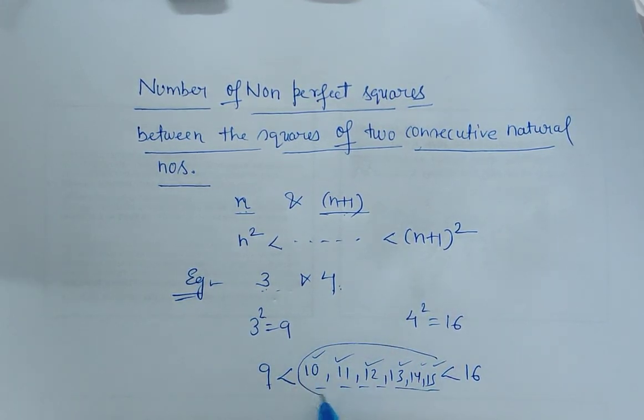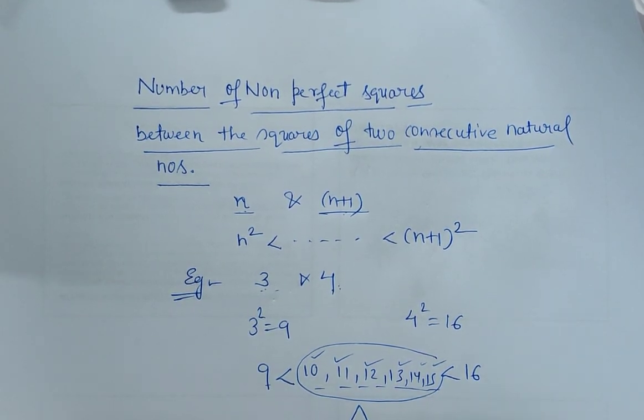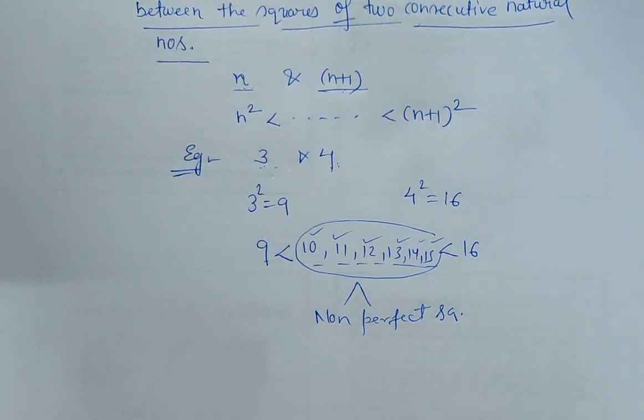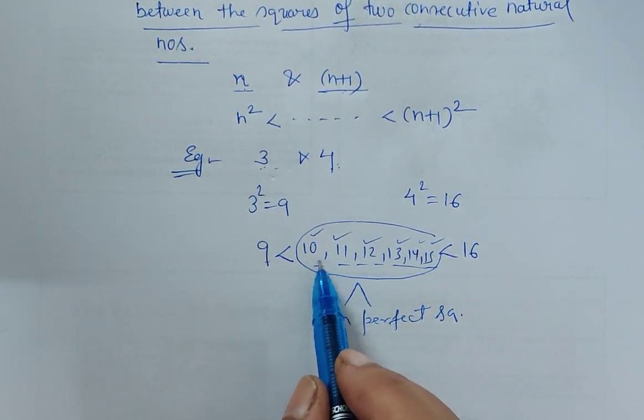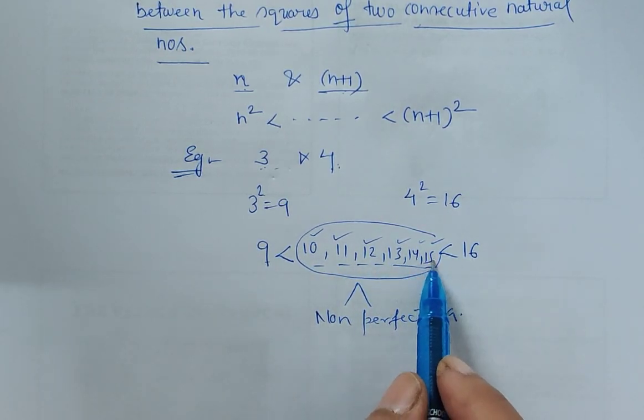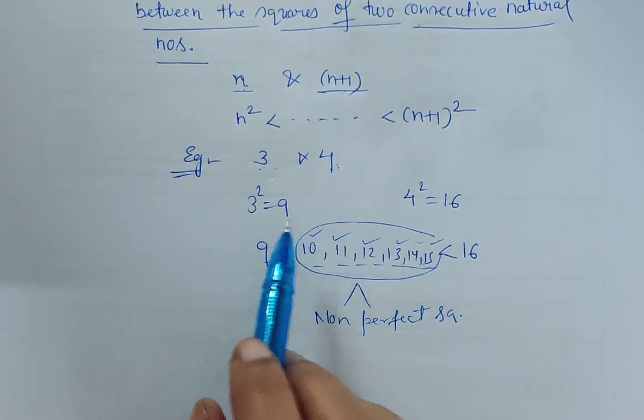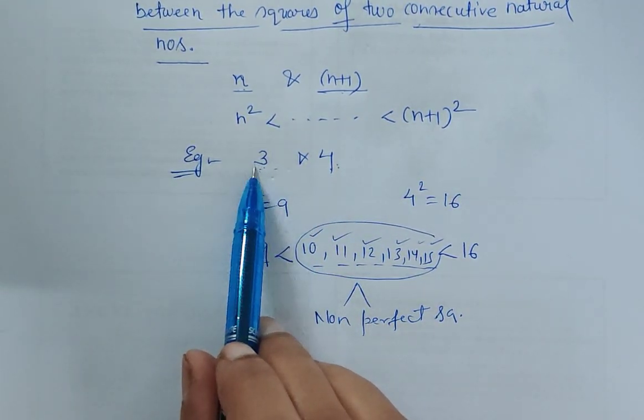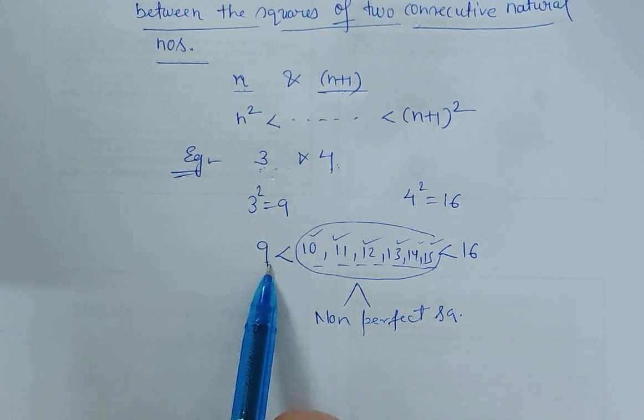They're non-perfect squares. So how many numbers are there? One, two, three, four, five, six. There are six numbers which are non-perfect squares that lie between the squares of these two consecutive numbers, 9 and 16.